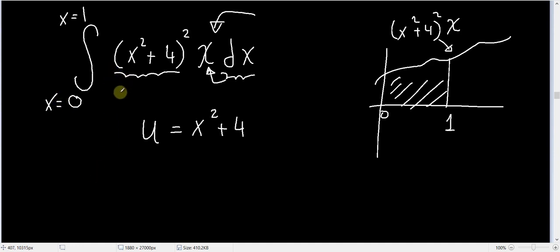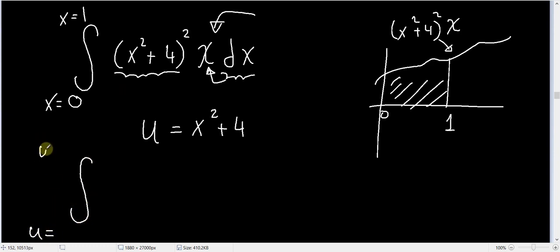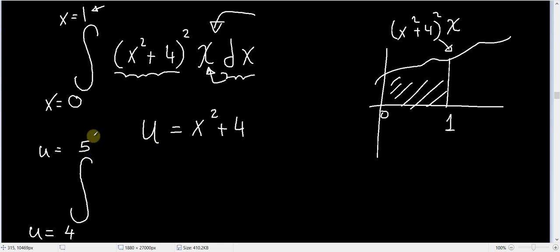This integral is really equal to another integration from u equal to something up to u equal to something. Since u = x² + 4, if x = 0 then u = 4, and if x = 1 then u = 5. So we have changed the limits of our integration.